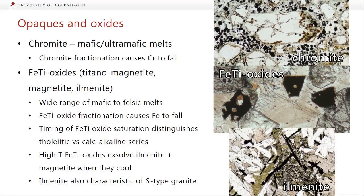Ilmenite is characteristic of S-type granite. For identification: chromites are often small, equant, looking cubic — square, tetrahedral, sometimes rhombus-shaped. Iron-titanium oxides can have irregular shapes, and when you look at them in terms of composition, they're often made up of different chunks of magnetite and ilmenite — it was one grain to begin with and then they split as it cooled. Ilmenite makes these needles. This example is actually from a gabbro, but you also find them in S-type granites.